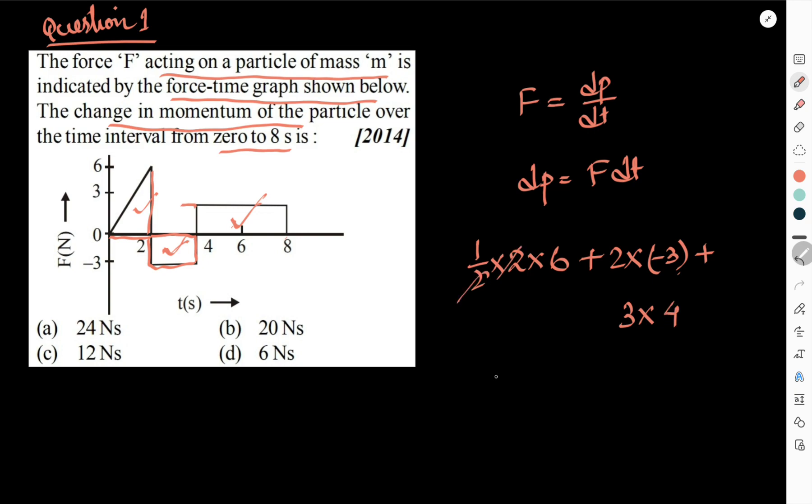So you can cancel this one, 6, this is minus 6 and this will be 12. So you can see 6 minus 6 cancel, left over is 12. So 12 is the answer, 12 Newton second. Option C is the correct answer.